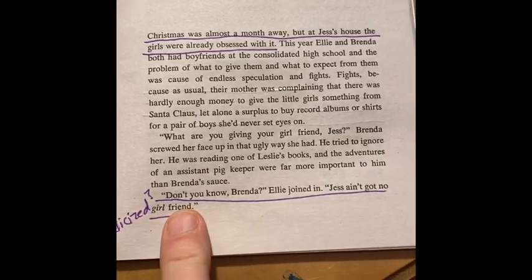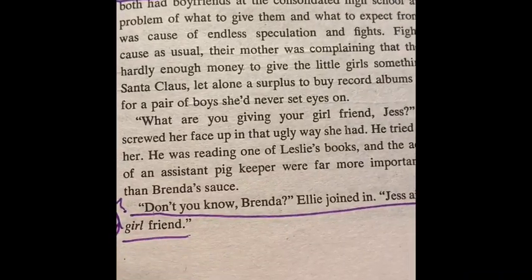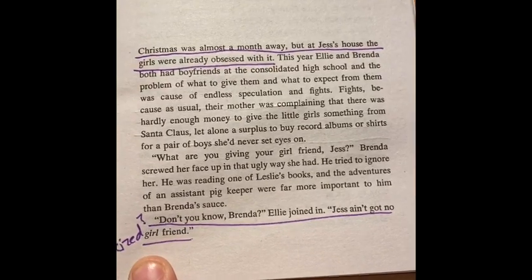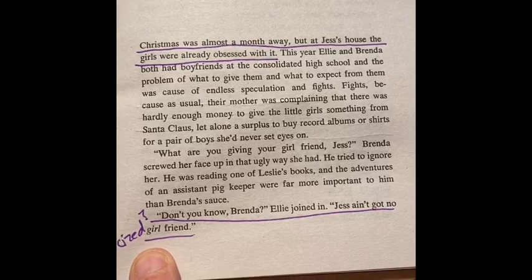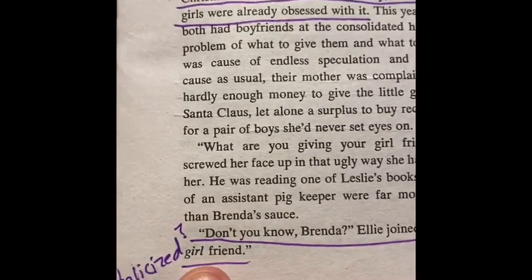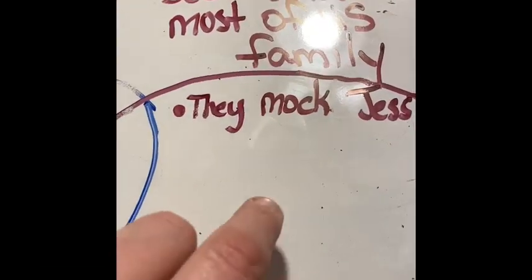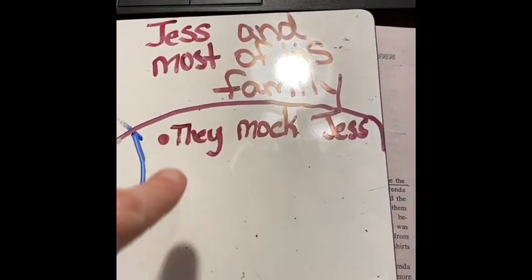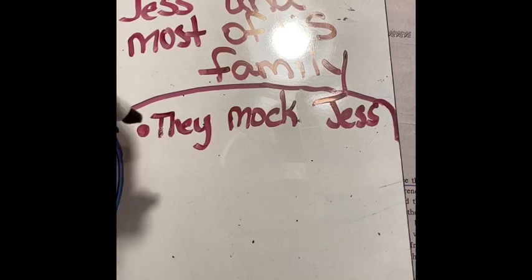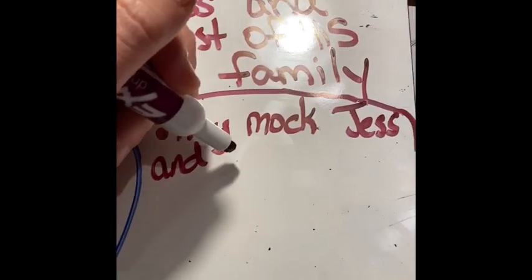Look at this sentence: 'Don't you know, Brenda?' Ellie joined in. 'Jess ain't got no girlfriend.' Toward the beginning of the book, when Jess first met Leslie, he noted she was kind of a tomboy — so much so that he wasn't positive whether she was a boy or a girl. Here they're mocking her, and it's italicized. So on the purple side of the Venn diagram — Jess and his family — they mock Jess and they mock his friend Leslie.